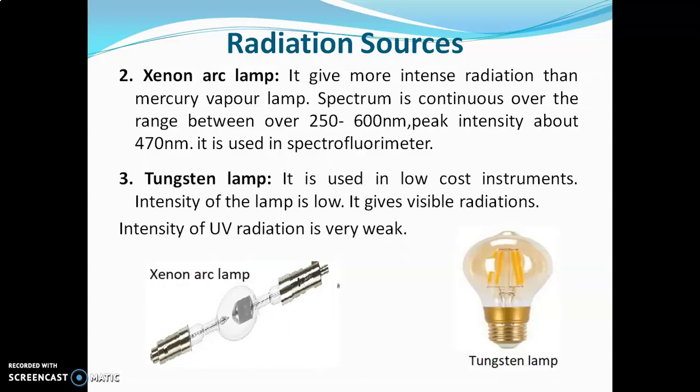The tungsten lamp is used in low-cost instruments. The intensity of the lamp is low — it gives visible radiations, and the intensity of UV radiations is weak.